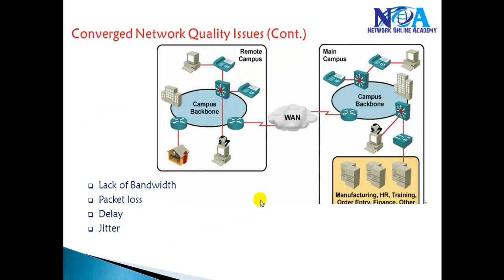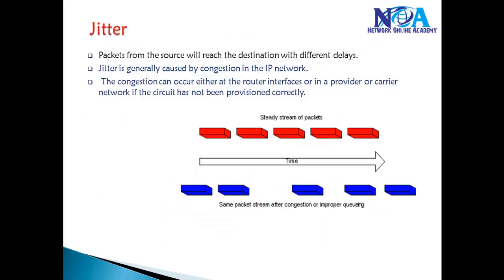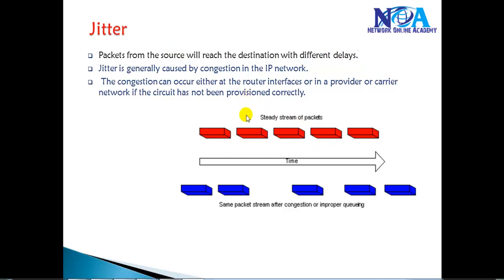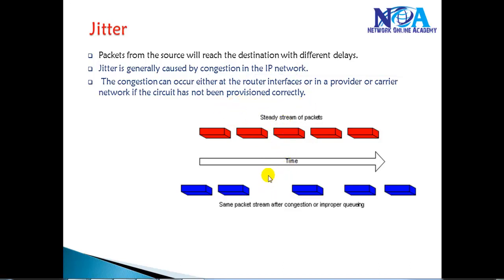The fourth problem is jitter. Jitter is where packets from a source reach the destination with varying delays. Normally when sending packets at a steady stream, there is a consistent delay between each packet. With jitter, there is extra and inconsistent delay. Jitter is generally caused by congestion on the network, which can occur at router interfaces, or in the provider or carrier network if the circuit is not working properly. Packets not arriving at a consistent rate is what we call jitter.